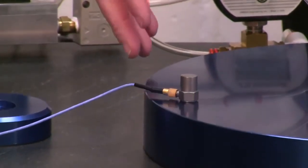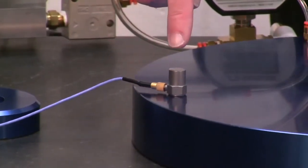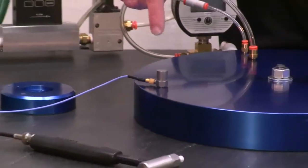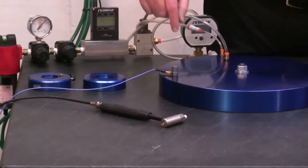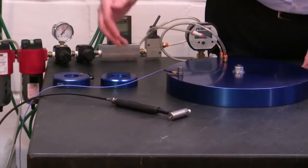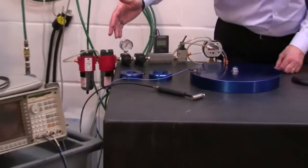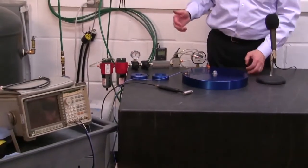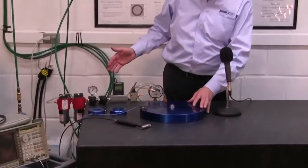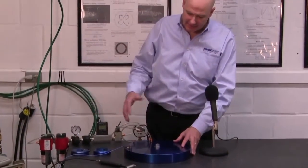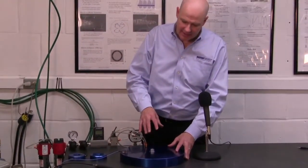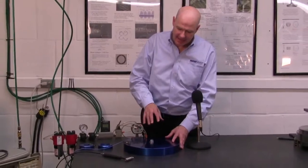We've laid the bearing down on its face, and we have an accelerometer on the back of the bearing. It's directly over the air bearing land. We have an instrumented hammer and a signal analyzer, and we're going to adjust the vacuum pressure and air bearing pressure in order to study the change in the dynamics of the air gap.